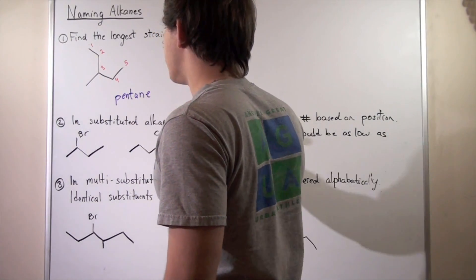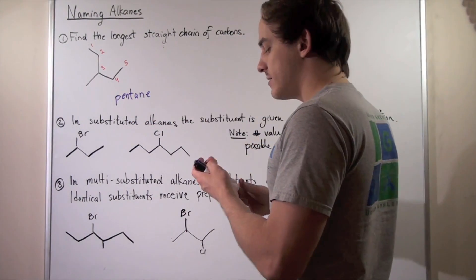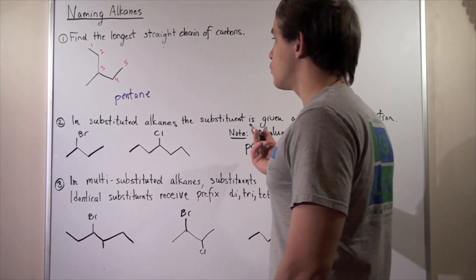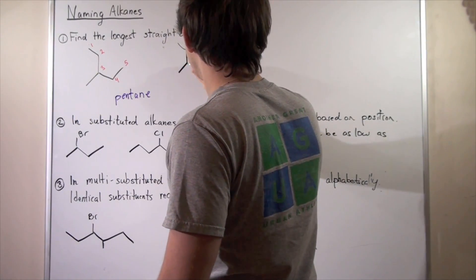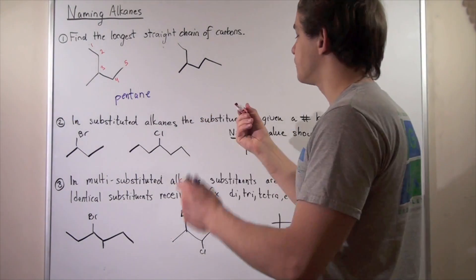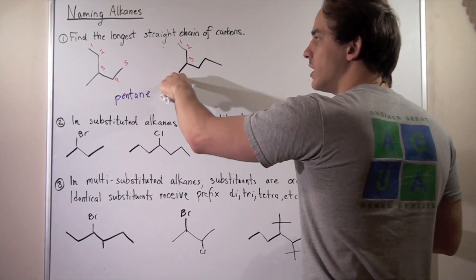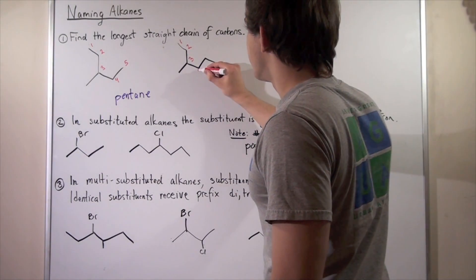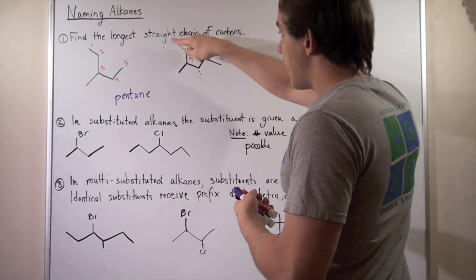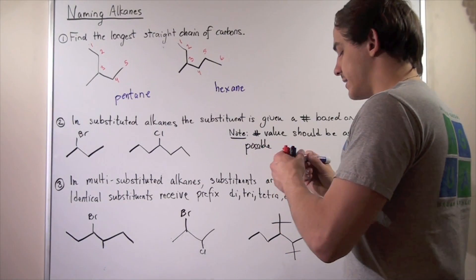We're not done naming this molecule — we'll come back to it after rule number two. Now let's look at a second alkane. One, two, three — we want to go the direction that gives us the longest chain. If we go one way, we end at four; the other way, we end at six. So our longest carbon backbone has six carbons, meaning we write hexane. Hex means six, -ane means alkane.